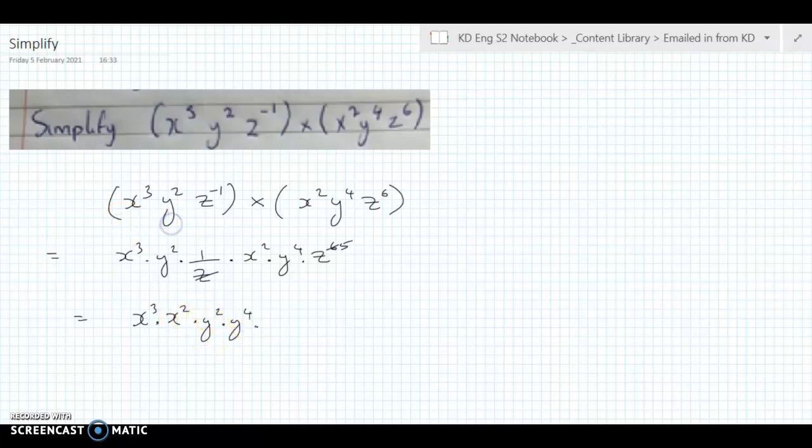x and x they're same base, we can add the powers in this situation when you're multiplying, so we get x to the power of 5 times y to the power of 6 times z to the power of 5. And that's it.